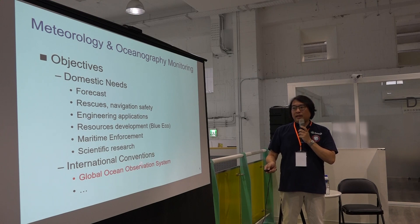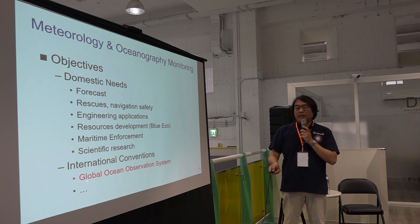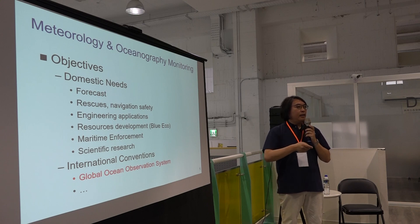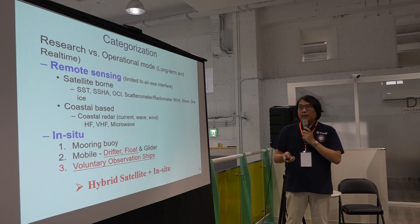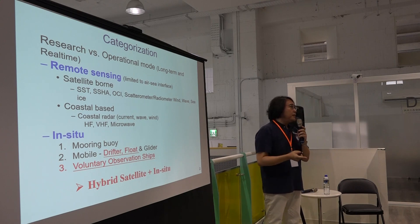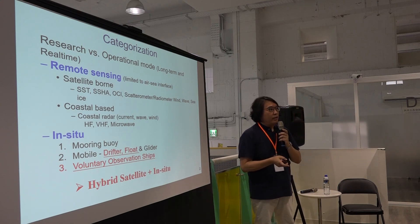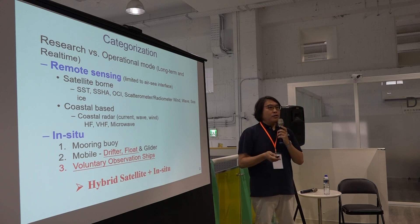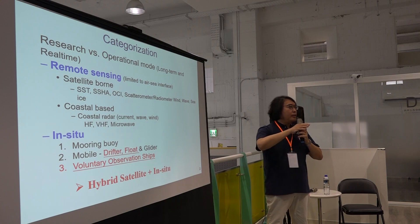For international conventions, we have a joint project called the Global Ocean Observation System, GOOS, from the United Nations, which tries to provide long-term real-time data to address the climate change crisis. From the perspective of ocean communities, monitoring can be categorized into two different purposes: one is for research and scientific studies.